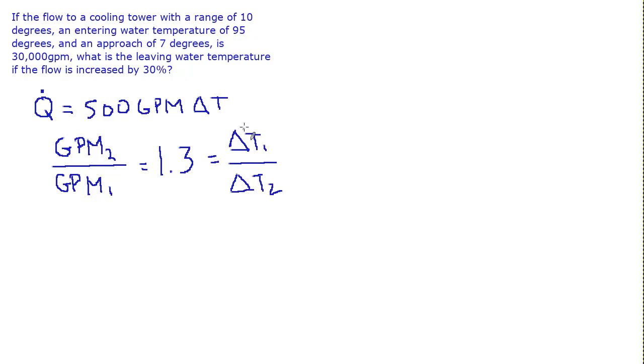We know delta T1 is the water delta T in the cooling tower, which is the same thing as the range. This is the condenser water return minus the condenser water supply, or in this problem, the entering water temperature minus the leaving water temperature. So that was originally 10. We can plug that in and solve for delta T2. Delta T2 turns out to be 7.7.